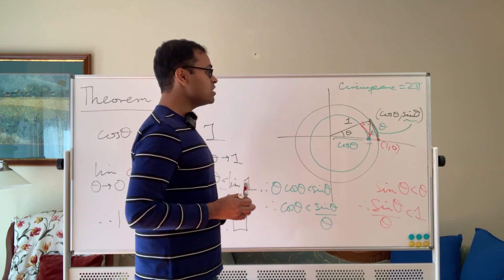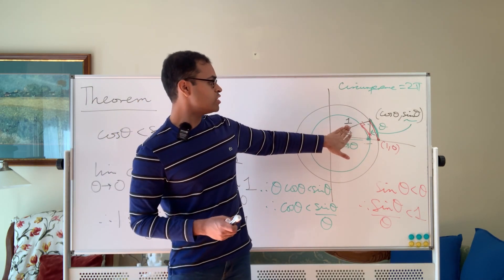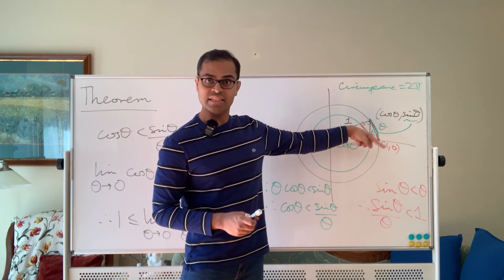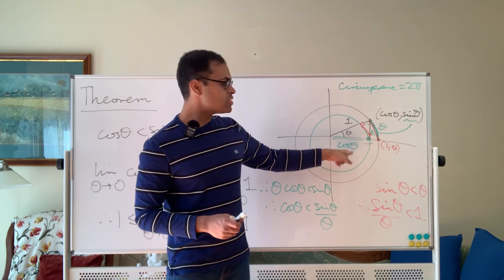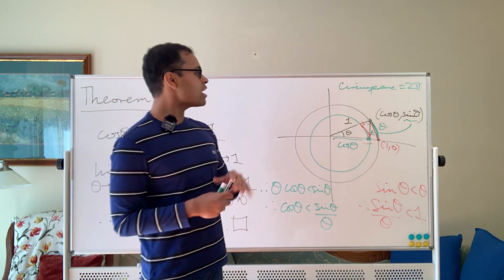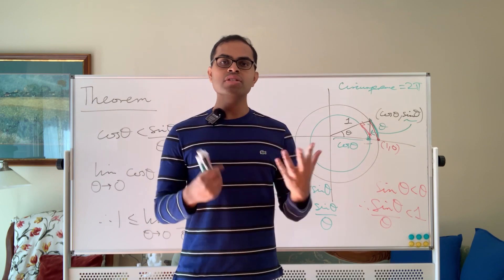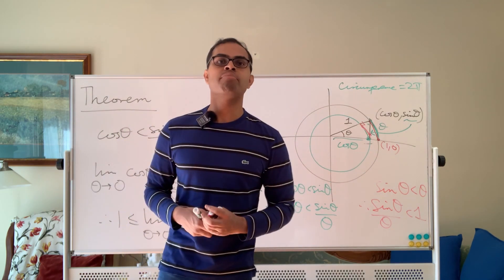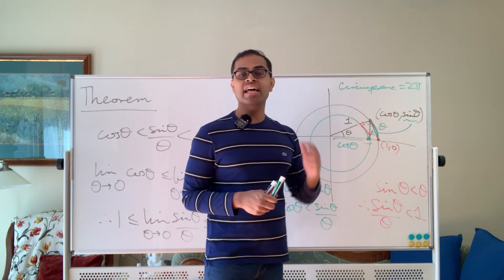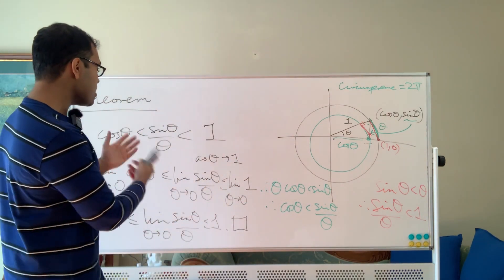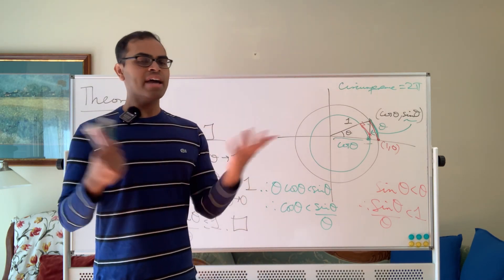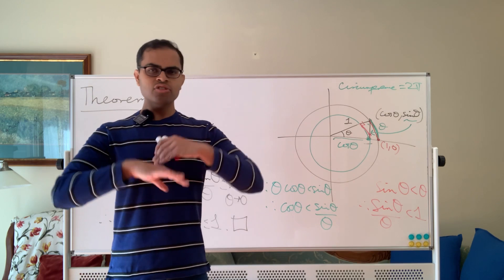That's a geometric proof using arc lengths. You can also do this with areas instead — you can say the area of the sector of the circle of radius cosine theta is less than or equal to the area of the triangle, which is less than or equal to the area of the big sector of the circle of radius 1. Try that out and see what you get. I like the arc length proof because it's really minimalist — it just uses the definition of arc length, which is basically the definition of pi. In fact, with this theorem you can also give a proof of what the area of a circle is.